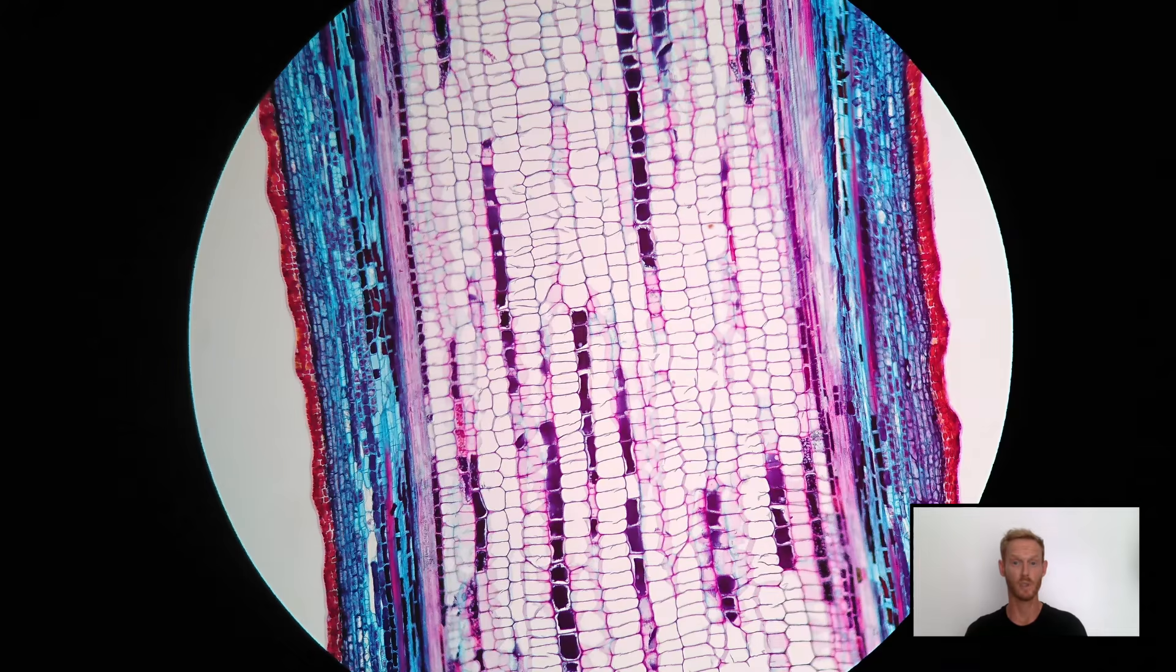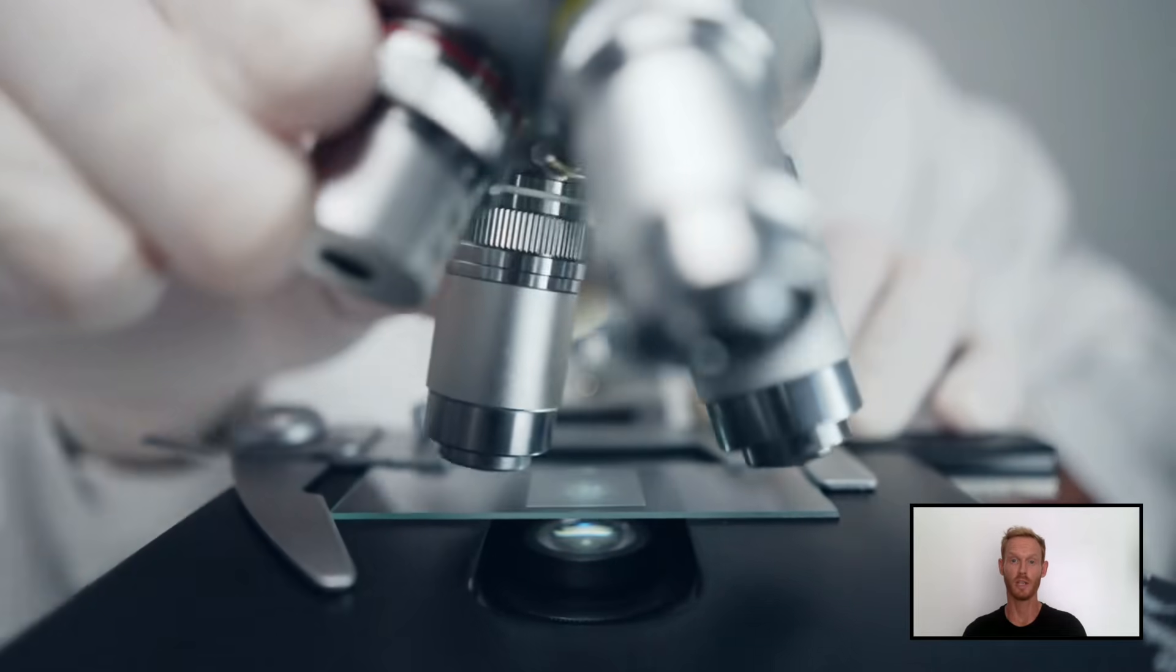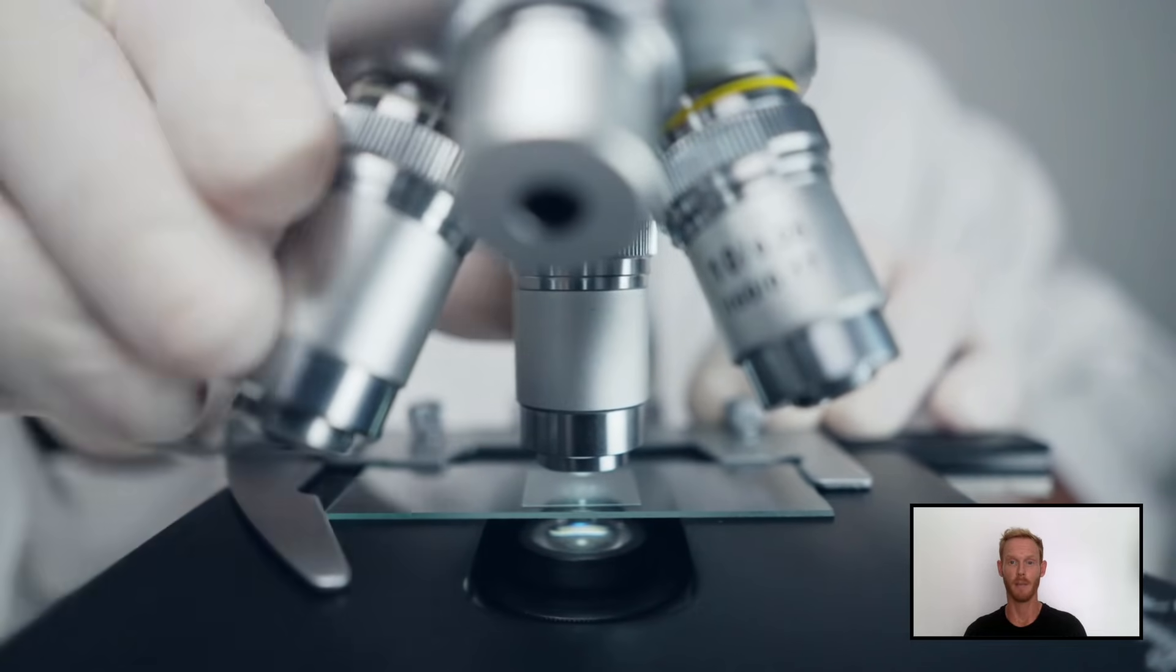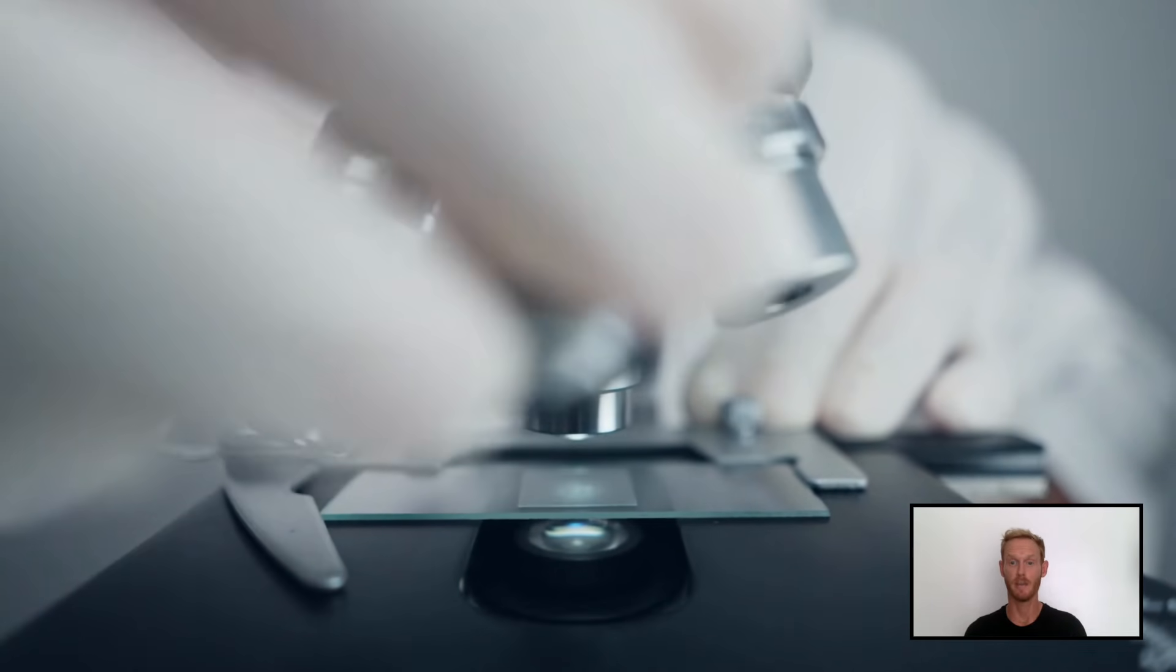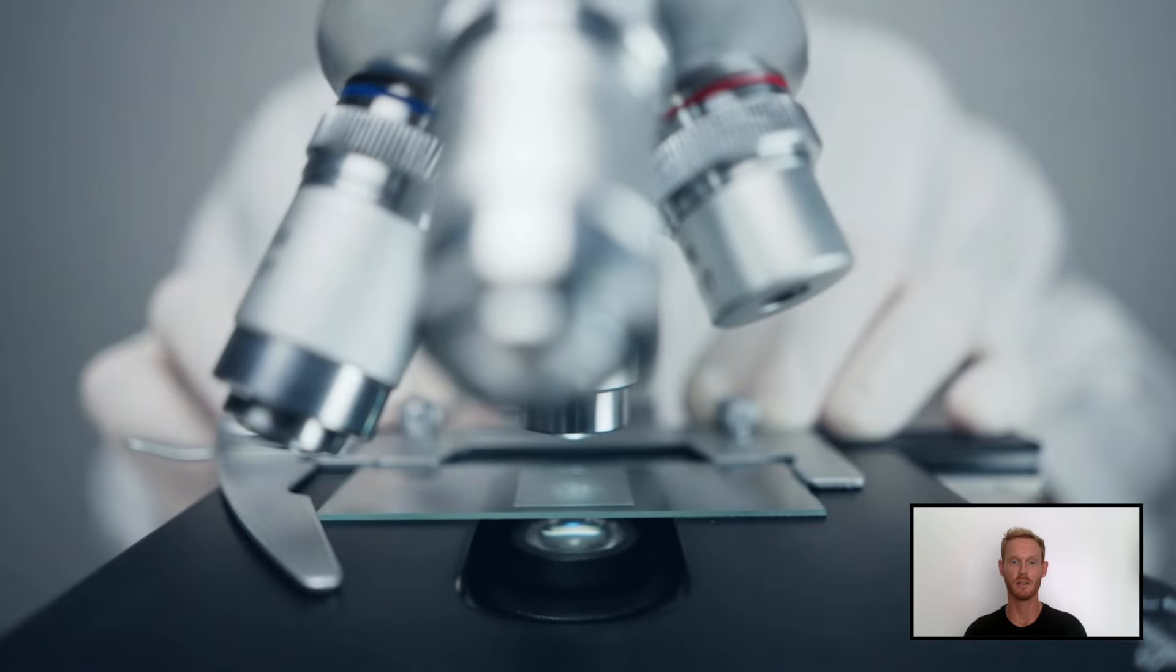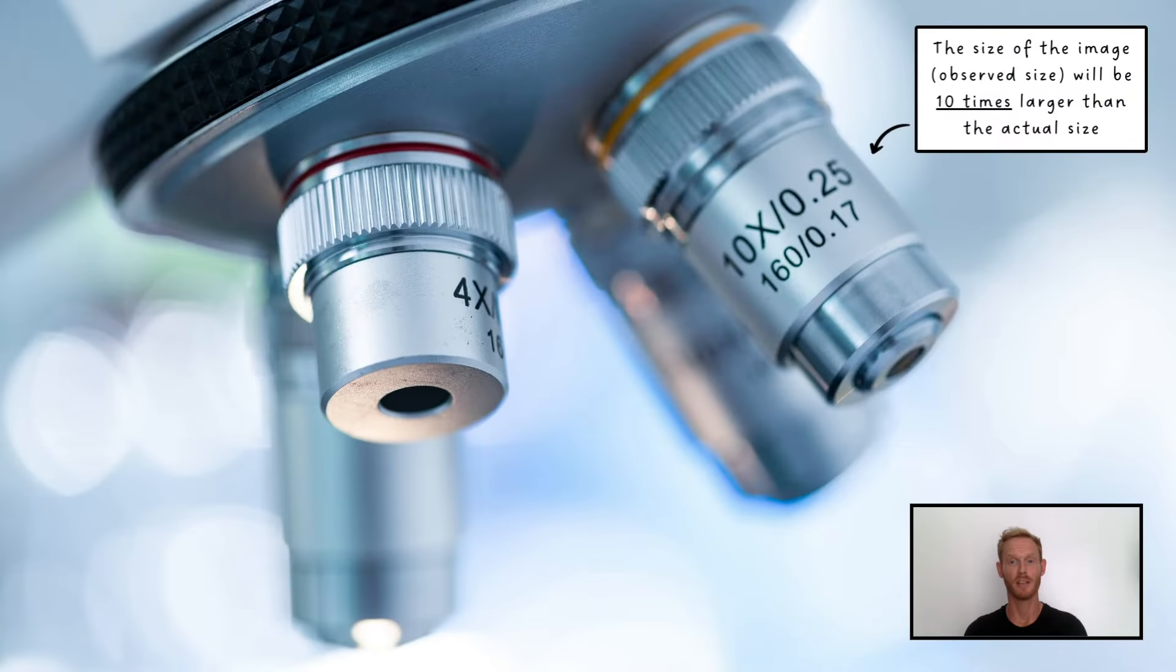Most cells are invisible to the naked eye and can only be studied with the assistance of a microscope. The lenses of a microscope are usually marked to indicate their magnifying power. This tells you how much bigger the image will be compared to the specimen's actual size. For example, a 10 times magnifying lens will provide an image 10 times larger than the specimen being observed.